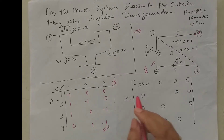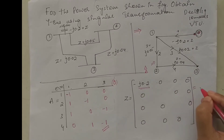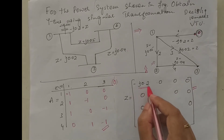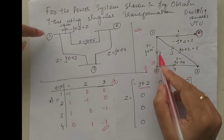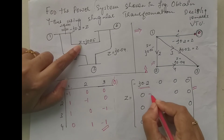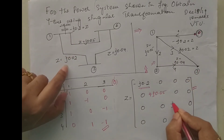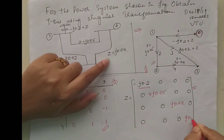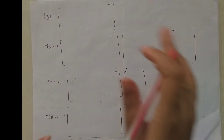There is no mutual coupling, so we write the primitive impedance matrix directly and then convert to primitive admittance. First element: impedance j0.2, so admittance = 1/(j0.2) = -j5. Second element between 1 and 2: impedance j0.05, admittance = -j20. Third element between 1 and 3: impedance j0.02, admittance = -j50. Fourth element between 2 and 3: impedance j0.04, admittance = -j25.